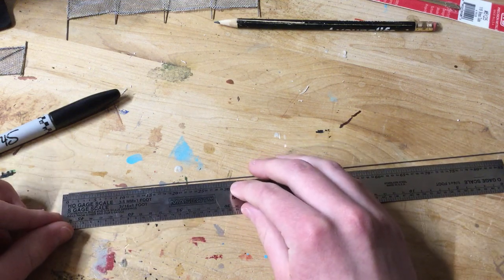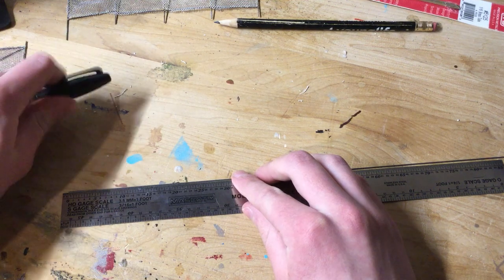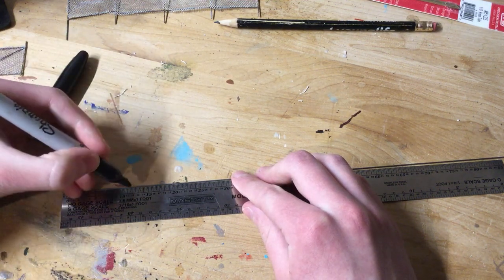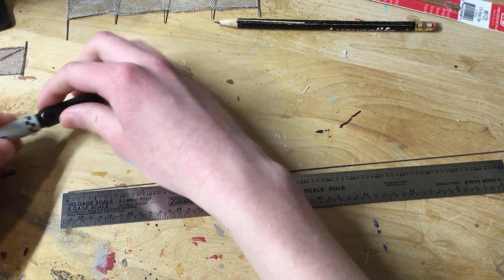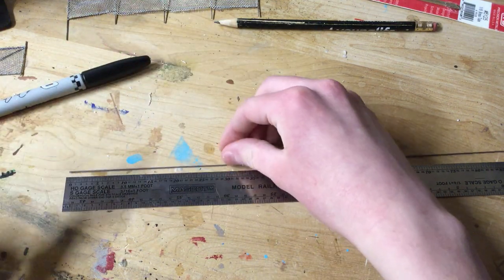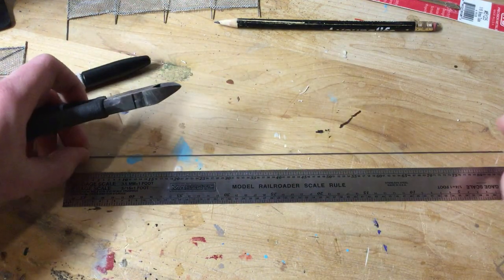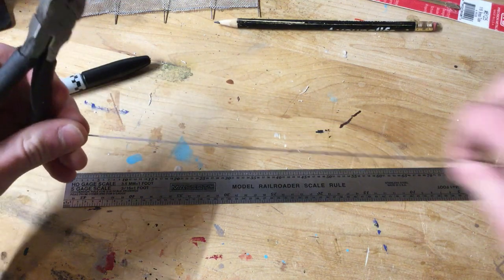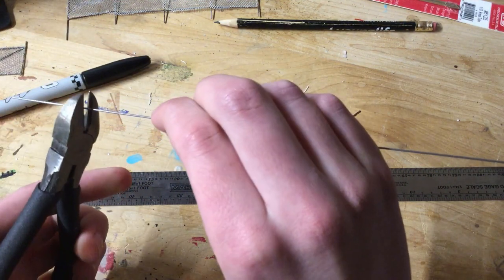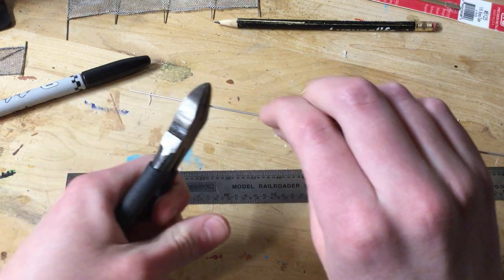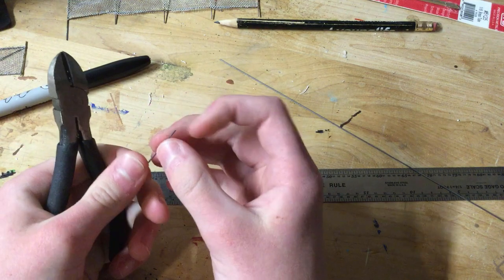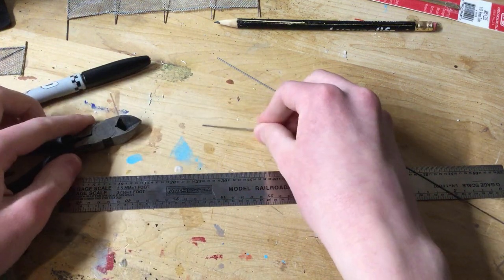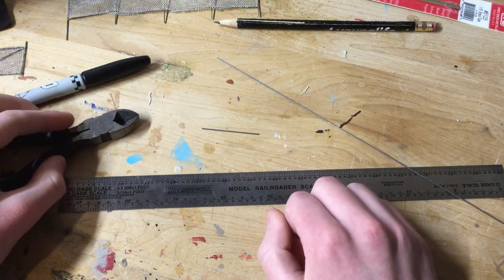So I'm going to use my HO rule and mark it off 12 feet, and then I just use some wire nippers. Find my mark and make sure you catch both pieces. Then touch that up with the file and cut the rest of your pieces.